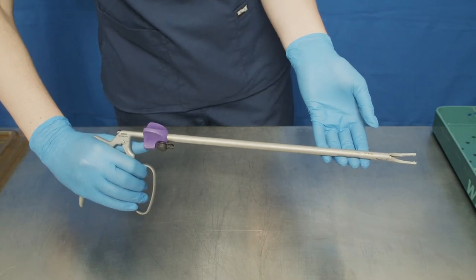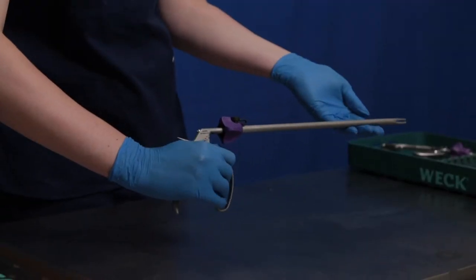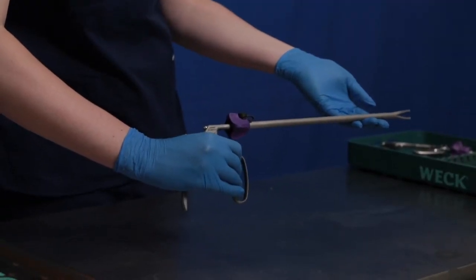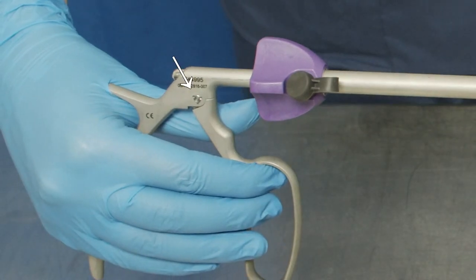All moving parts must be inspected for wear and confirmed to be functional. Confirm smooth operation during opening and closing of instrument handle and reinforcing screw. Confirm that the reinforcing screw is not loose.